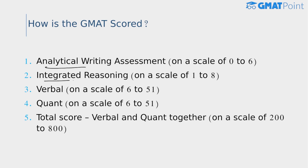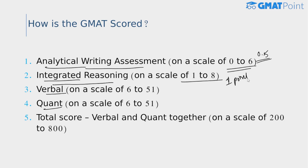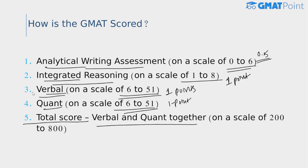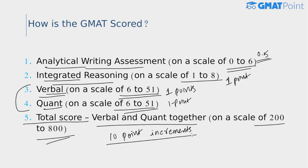Looking at the scale scores for each section: the Analytical Writing Assessment scores range from 0 to 6 in 0.5 increments; Integrated Reasoning scores range from 1 to 8 in 1-point increments; the Verbal section ranges from 6 to 51 in 1-point increments; and the Quant section similarly ranges from 6 to 51 in 1-point increments. The total score includes only quant and verbal performance, ranging from 200 to 800 in 10-point increments — meaning your score will always be a multiple of 10. The average GMAT score for a recent period was 568.21.